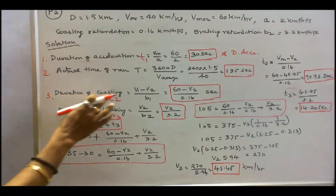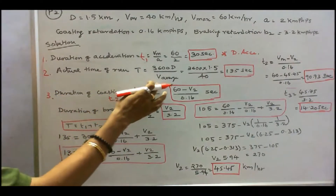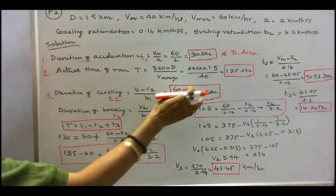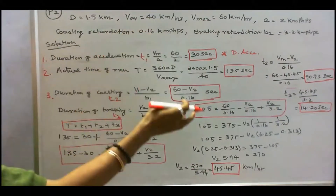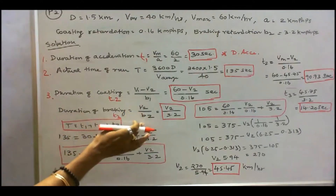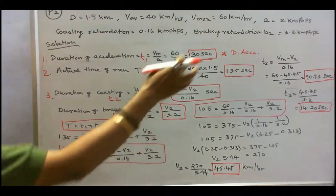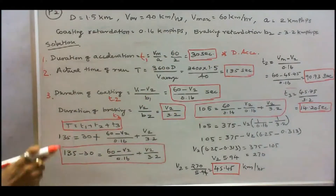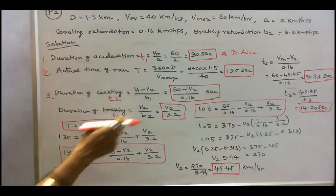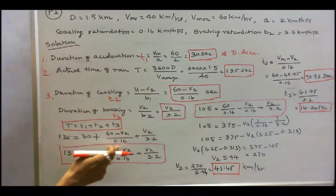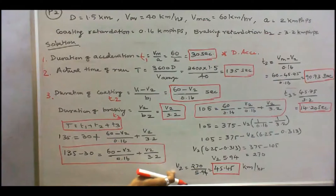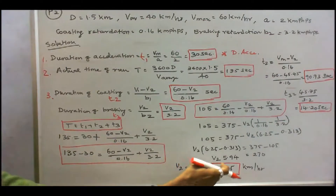Duration of coasting T2 = (V1 − V2) / coasting retardation = (60 − V2) / 0.16. Duration of braking T3 = V2 / 3.2. Since T = 135: 135 = 30 + (60 − V2)/0.16 + V2/3.2. Solving this equation gives V2 = 45.45 km per hour.